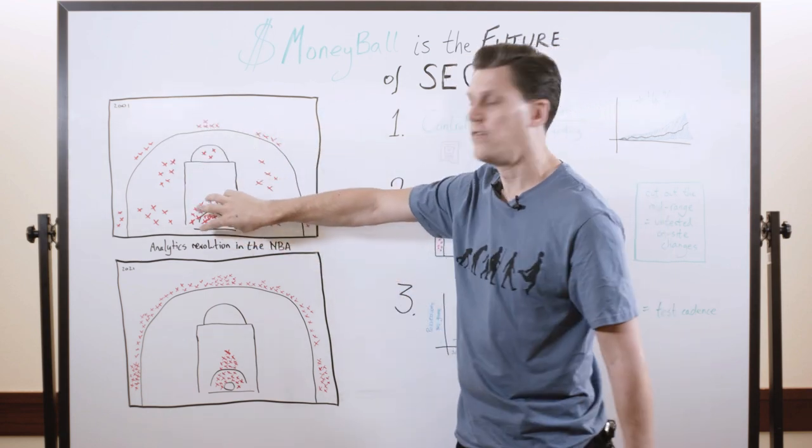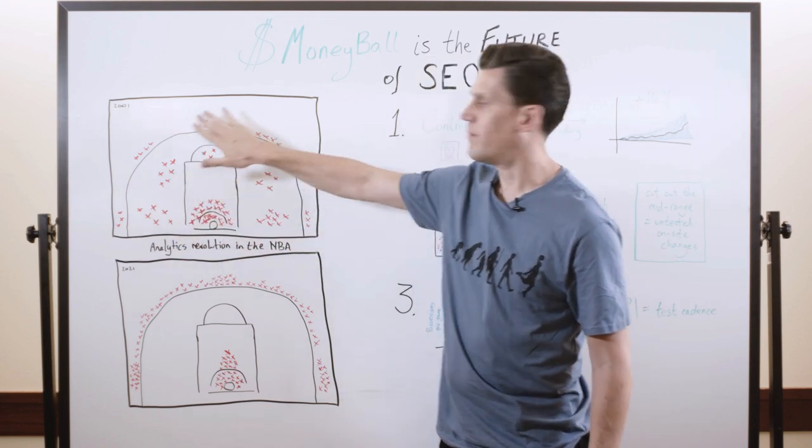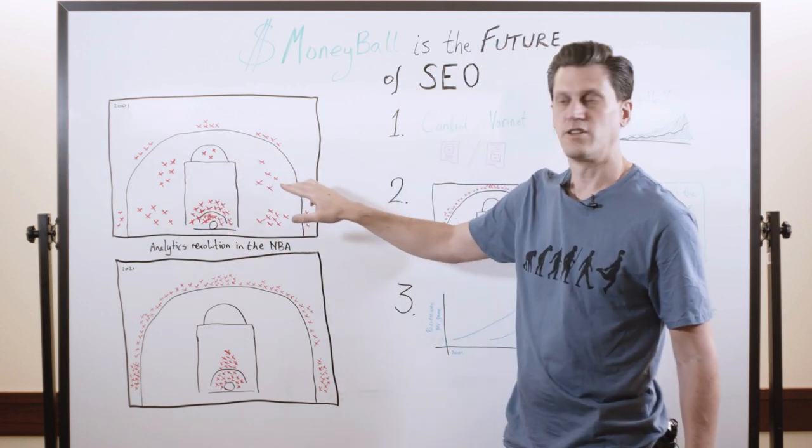You can see that they took a load of shots around the rim - these are the dunks and layups. They took a load of shots from outside the three-point line, and they took a lot of these mid-range shots, which are all the jump shots in between.